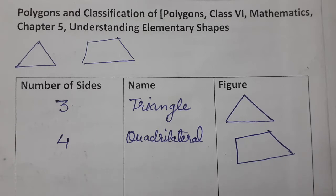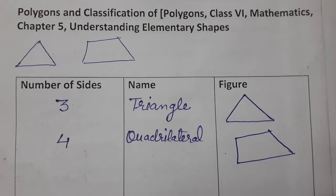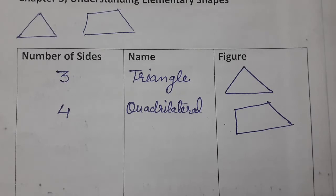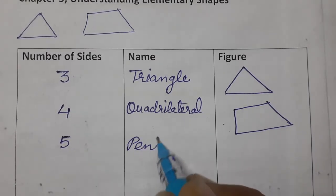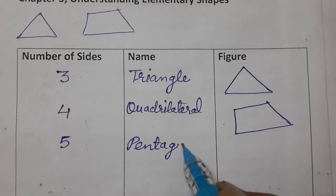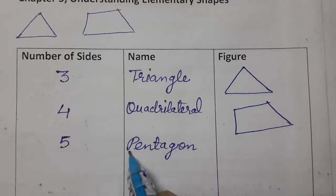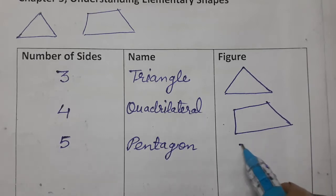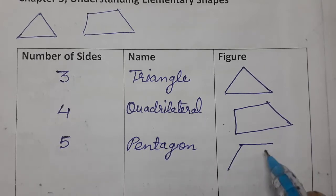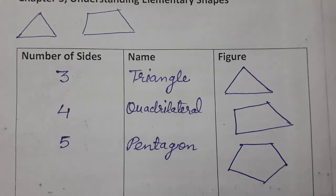Now what happens if the number of sides are 5? Then it is called pentagon. 5 sides. Pentagon. Penta stands for 5. What is the meaning of pentagon? 5 sides. If it contains 5 sides, we call it a pentagon: 1, 2, 3, 4, 5. Of any shape we can make.